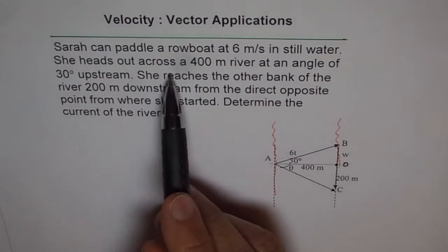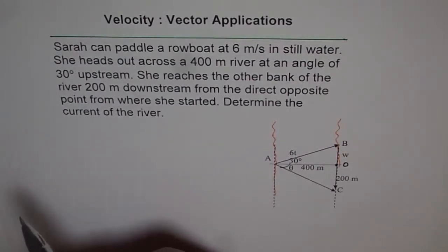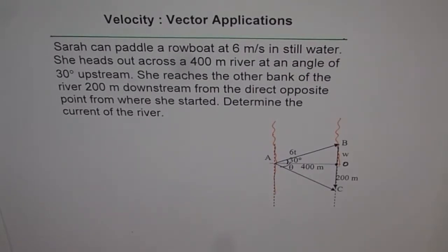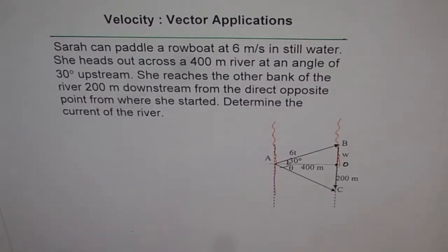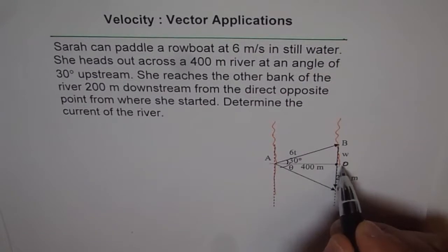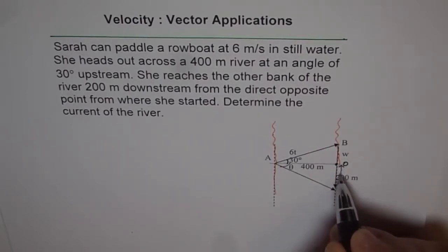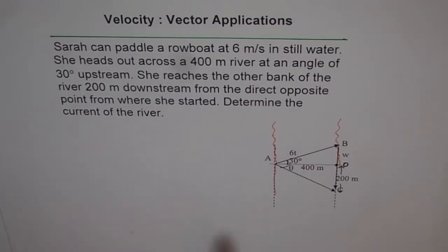She heads out at an angle of 30 degrees upstream, so the angle theta of 30 degrees is measured from the upstream direction. She reaches the other bank 200 meters downstream — that means from point O she reaches point C, which is 200 meters away. So the distance O to C is 200 meters. That is the current of the water we need to figure out.